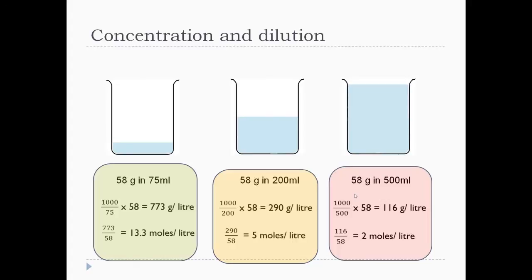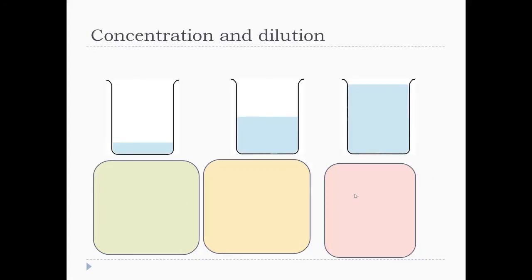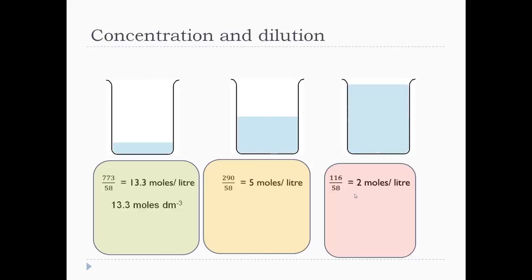If you work through the other columns, the beaker on the right has only 2 moles per litre, so it's much more dilute than the left. That's 13.3 moles per litre, which we can also write as 13.3 moles per dm³, since one litre equals one dm³.